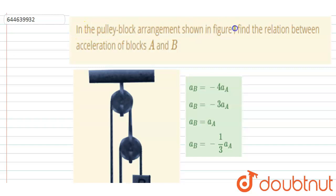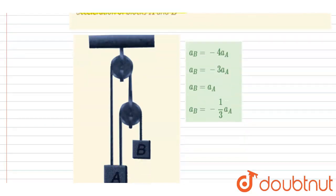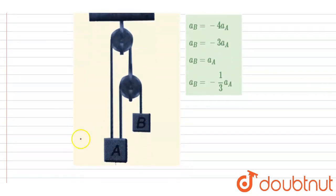Hello everyone. In the pulley-block arrangement shown in the figure, find the relation between the acceleration of block A and block B. If you see, this is the diagram. Let's say block A is moving in the upward direction and block B is moving in the downward direction.